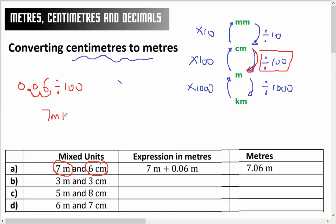So I've got 7 metres plus 0.06 metres, which would give me 7.06. 7 plus 0.06 gives 7.06, and there you are, that's where that comes from.